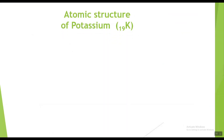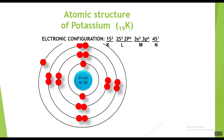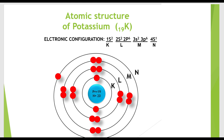Now potassium. The symbol for potassium is K with atomic number 19, showing it has nineteen electrons. The electronic configuration of potassium is 1s2 2s2 2p6 3s2 3p6 4s1. The atomic structure of potassium shows nineteen protons and twenty neutrons in the nucleus, with nineteen electrons around the nucleus: two in the K shell, eight in the L shell, eight in the M shell, and one in the N shell.